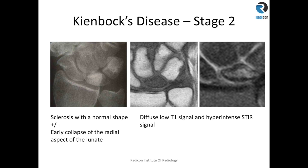Stage 2 is where you tend to get some sclerosis on the plain films, but the shape or morphology of the lunate may remain the same or may undergo early collapse. On MR, you see diffuse low T1 signal — quite diffuse and involving the whole of the lunate — and you get patchy hyperintense signal intensity on STIR sequences in the lunate.